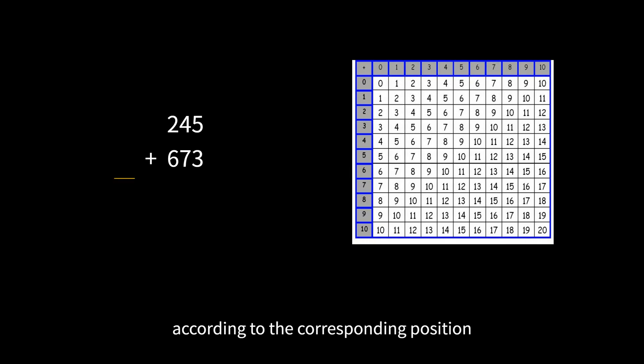Now how to add 245 and 673 in decimal. First, we need an addition table. Then, according to the corresponding position, start from the ones place and add up to 8, then the second place, and so on. This is very simple.